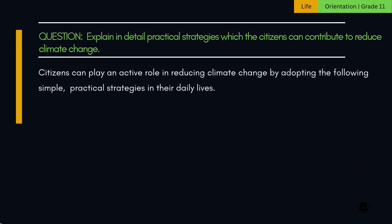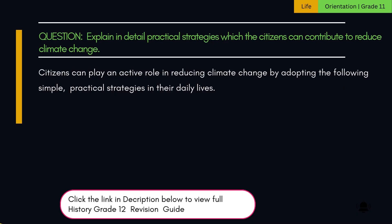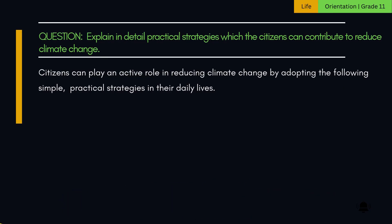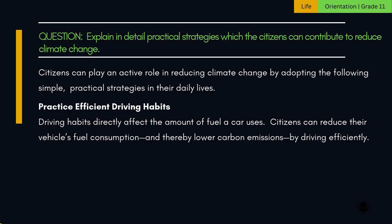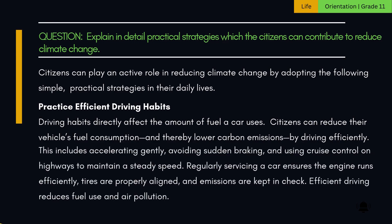Question: Explain in detail practical strategies which citizens can contribute to reduce climate change. Citizens can play an active role in reducing climate change by adopting the following simple, practical strategies in their daily lives. 1. Practice efficient driving habits. Driving habits directly affect the amount of fuel a car uses. Citizens can reduce their vehicle's fuel consumption and thereby lower carbon emissions by driving efficiently. This includes accelerating gently, avoiding sudden braking, and using cruise control on highways to maintain a steady speed. Regularly servicing a car ensures the engine runs efficiently, tyres are properly aligned, and emissions are kept in check.